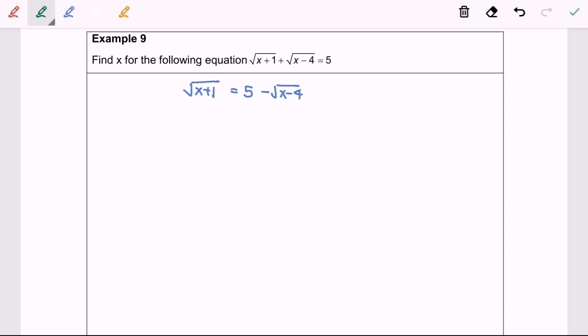Next step, in order to eliminate the root, I have to square both sides. For the left-hand side, we will have x plus 1 equals (5 minus square root of x minus 4)(5 minus square root of x minus 4).